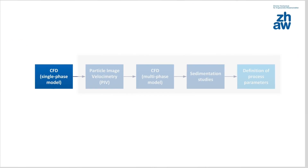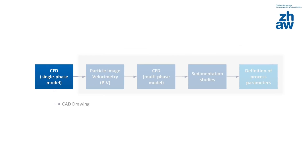In CFD simulation, the first step is to prepare a CAD drawing of the bioreactor. Next, mesh generation is performed to discretize the fluid volume into small volume elements. Finally, a finite volume solver is used to calculate fluid flow patterns, fluid velocities and other main bioengineering parameters.